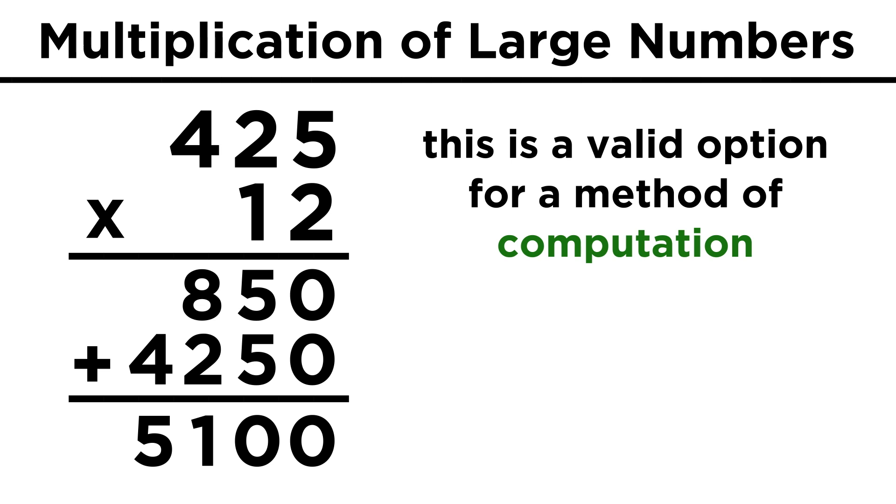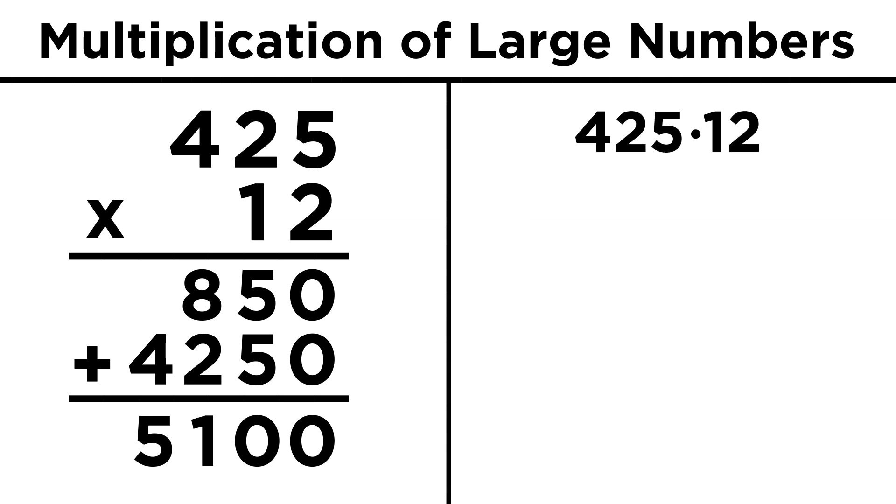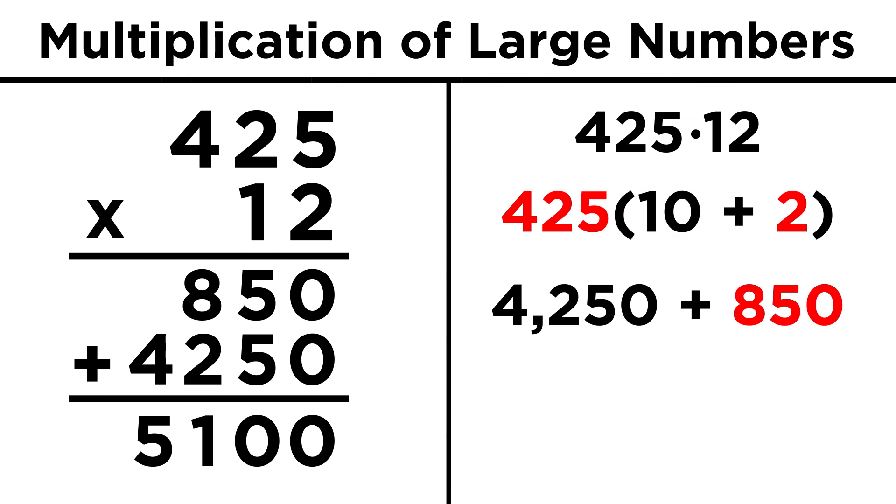If you like using pen and paper, and are very diligent, there is no problem with this approach. But it opens up a lot of opportunities for error, so you may prefer the simpler approach, using the distributive property. Instead of four hundred twenty-five times twelve, let's do four hundred twenty-five times ten plus two. When multiplying by ten, we just add a zero, so that's four thousand two hundred and fifty. Then we multiply by two. Four hundred times two is eight hundred, and twenty-five times two is fifty, so that's eight hundred and fifty. Add them together, and we get our answer.